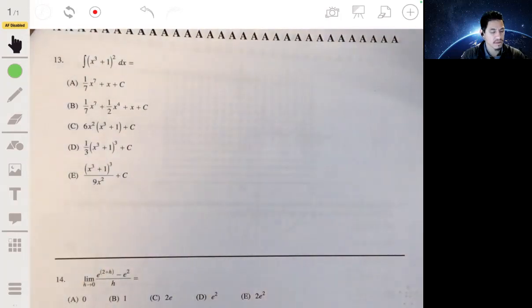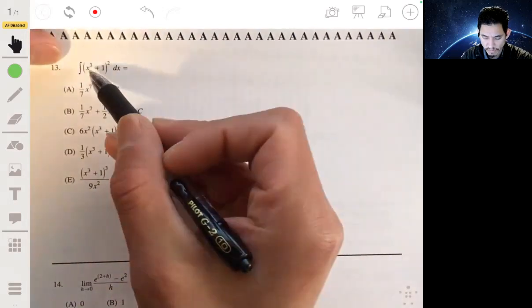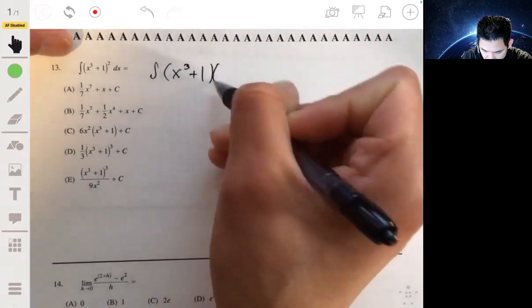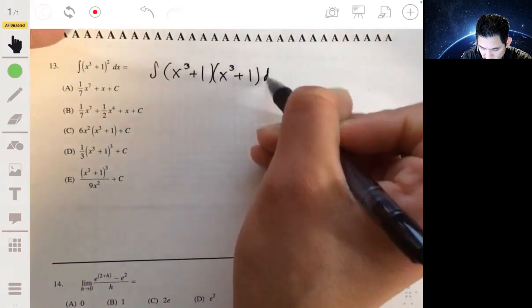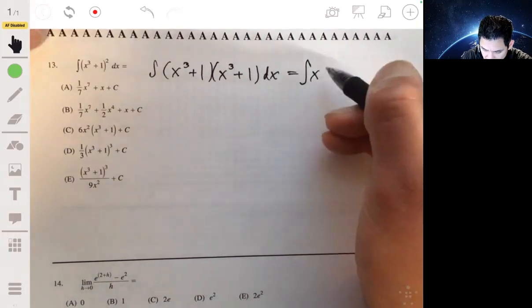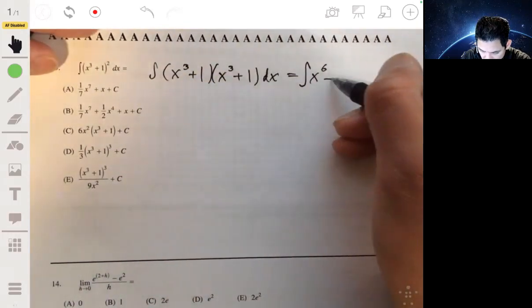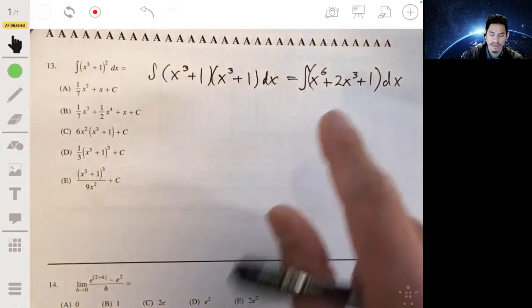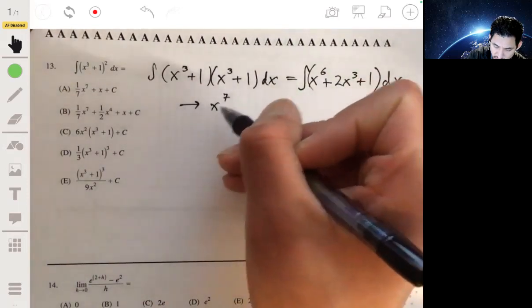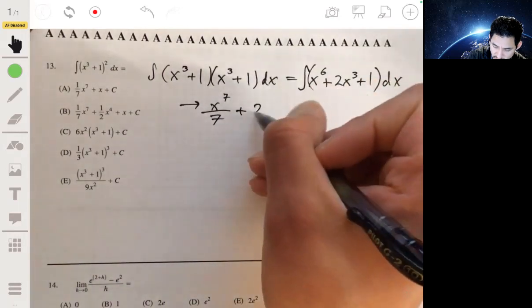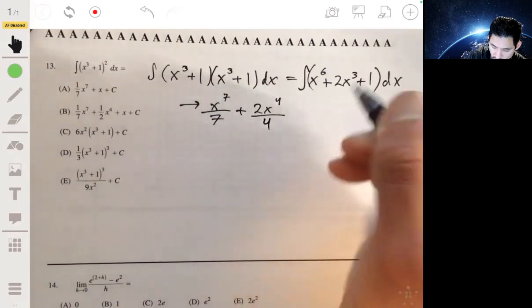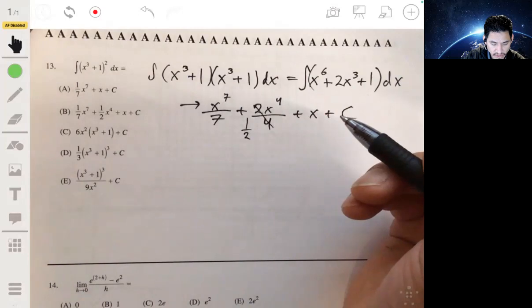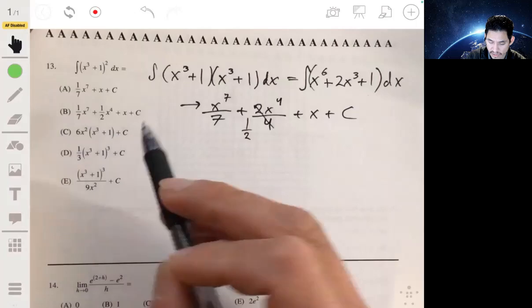Problem 13. I would just expand this. So we just kind of think of this as the integral of (x³ + 1) times (x³ + 1) dx. So this is equal to the integral of x⁶ plus x³ plus x³ or plus 2x³ plus 1 dx. And this is easily integrable by just using the anti-power rule. So x⁷ over 7 plus 2x⁴ over 4 plus x plus c. 2 over 4 is just 1 half. So let's see what we got. And 7. Okay, so the answer would be b.